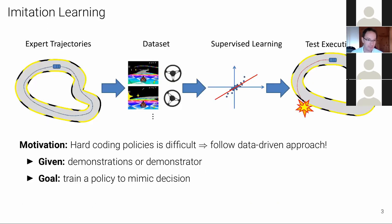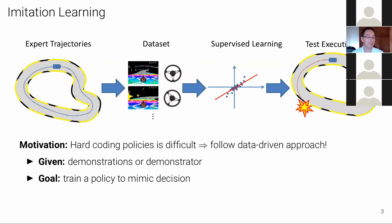Imitation learning is essentially supervised learning to train the policy that maps the image to steering and gas commands. The motivation is that hard-coding a policy is difficult, so we follow a data-driven approach. We mount a camera on a car, drive through a city, and record both the images and the steering commands — creating a labeled dataset of inputs and outputs. We then have a supervised learning problem where we directly regress from images to steering commands, and the goal is to train the policy to mimic the expert's decisions.